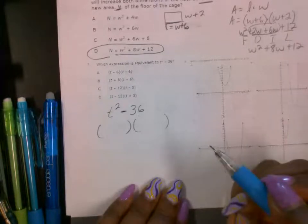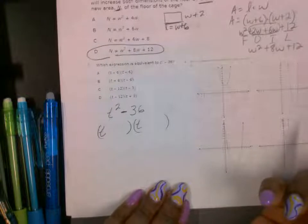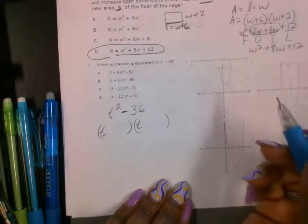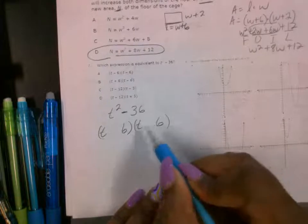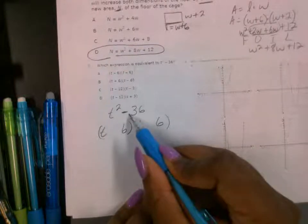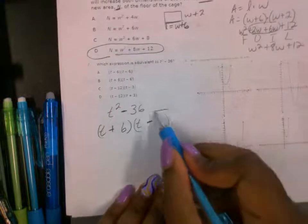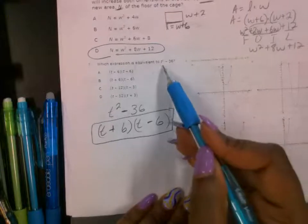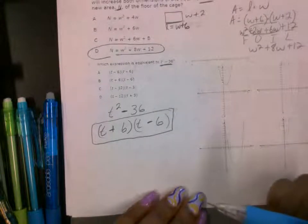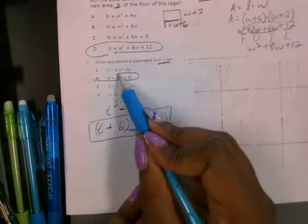So when you have a problem as such, you put T in both, because T times T is going to give you T squared. The square root of 36 is 6. And in order to multiply to get a negative 36, one has to be a positive and the other has to be a negative. So this is going to be the equivalent expression for that binomial. So that answer choice is going to be B.